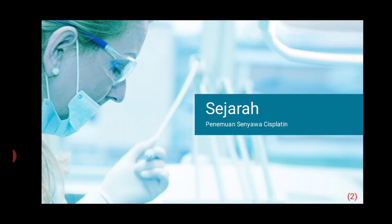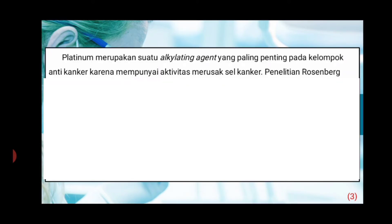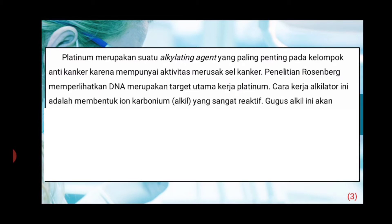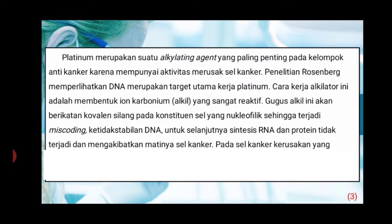Pertama, sejarah penemuan senyawa Cisplatin. Cisplatin merupakan suatu alkylating agent yang paling penting pada kelompok anti-kanker karena mempunyai aktivitas merusak sel kanker. Penelitian Rosenberg memperlihatkan DNA merupakan target utama kerja Cisplatin. Cara kerja alkylator ini adalah membentuk ion karbonium atau alkyl yang sangat reaktif. Gugus alkyl ini akan berikatan kovalen silang pada DNA sel yang nukleofilik sehingga menjadi miskoding, mengakibatkan sintesis RNA dan protein tidak terjadi dan matinya sel kanker.